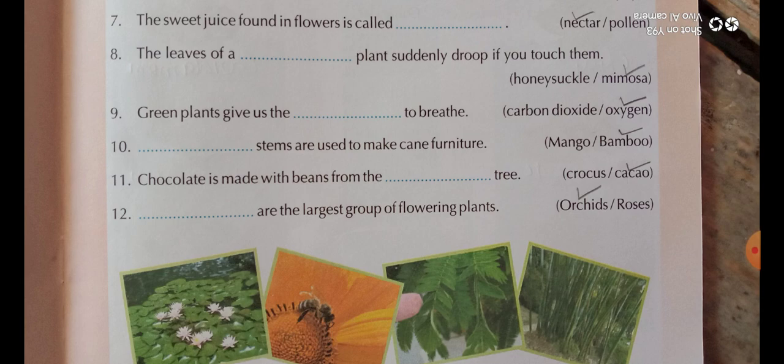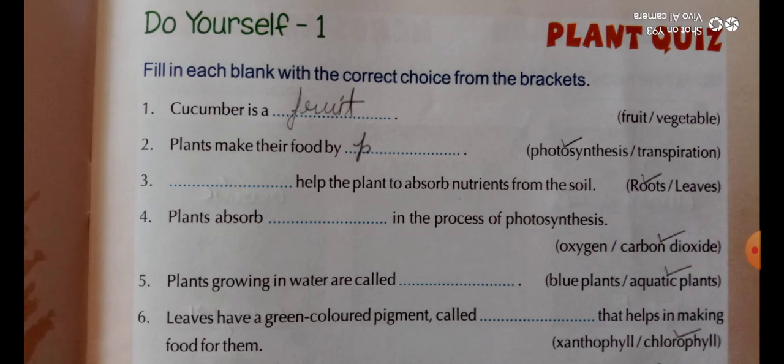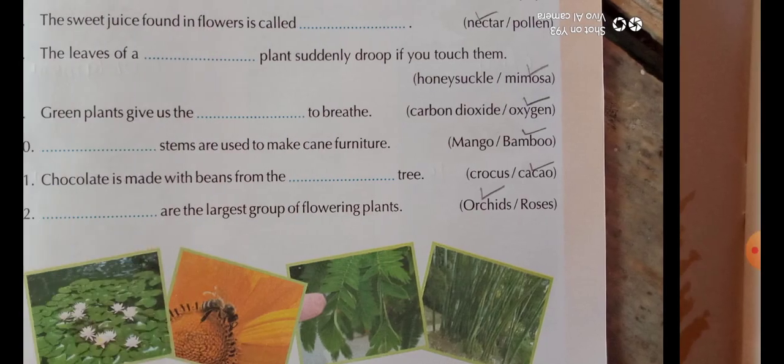The answer is bamboo. Question eleven: chocolate is made with beans from the dash tree — crocus or cacao? The answer is cacao. Question twelve: dash are the largest group of flowering plants — the answer is orchids. In this way you will complete Do Yourself One in your book.